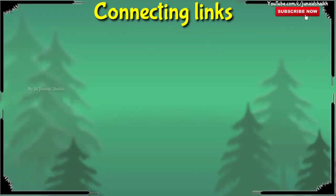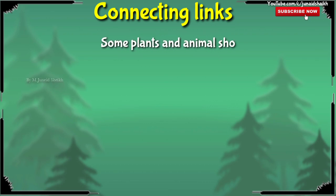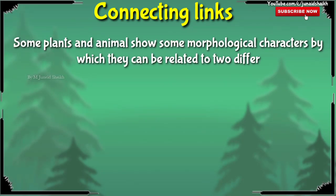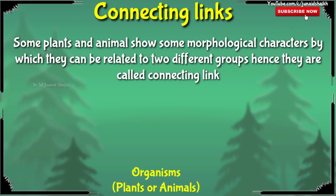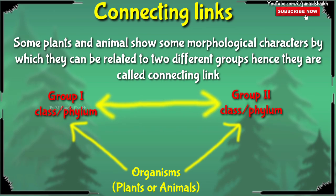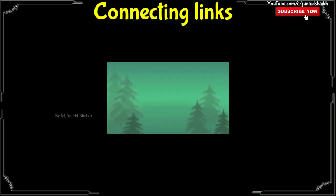Connecting links are evidences of evolution. In connecting links, some plants and animals show morphological characters by which they can be related to two different groups, hence they are called connecting links. Some plants and animals show morphological characters that tell us that a single organism relates to two different groups, phyla, or classes, and that organism is the connecting link joining those two classes, phyla, or groups. Let's look at some examples whose characters relate to two different groups.